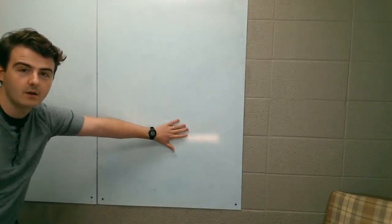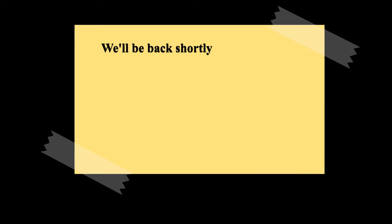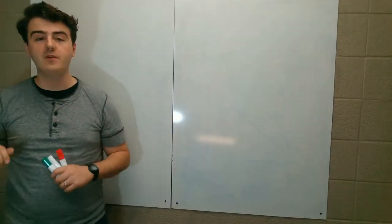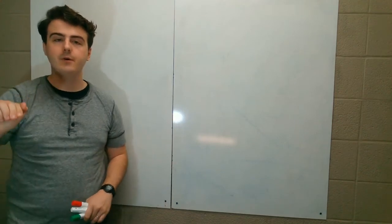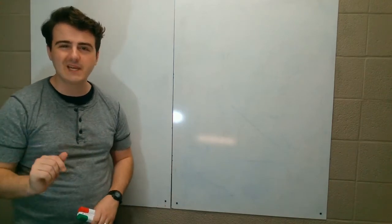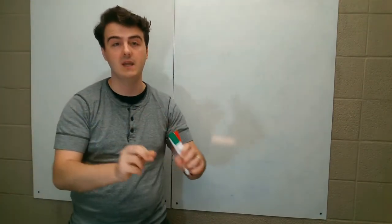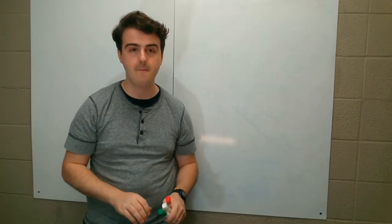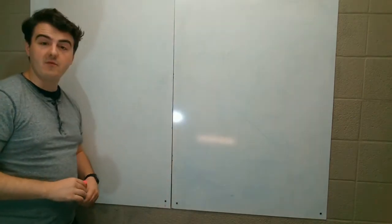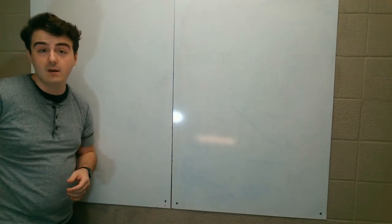So time to make a model. Got our trusty whiteboard here. We are going to call this model the circular flow model of an economy. And what this is going to show us is the relationship between businesses and people broadly — taking something complicated and making it simple. Very first model.